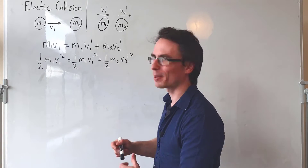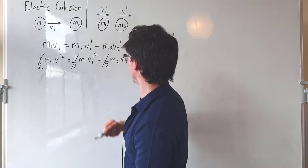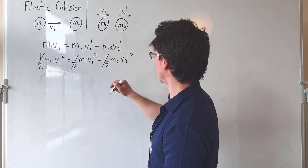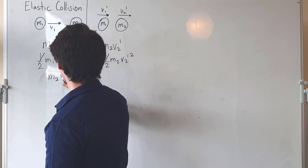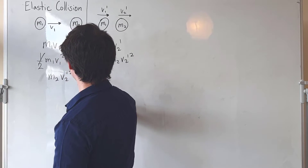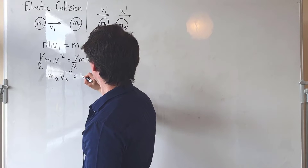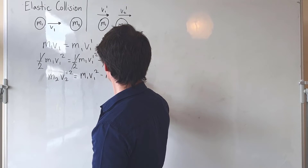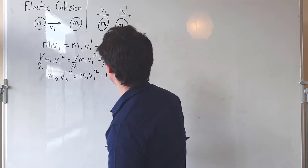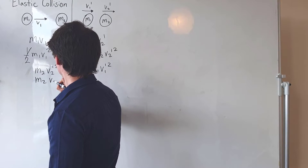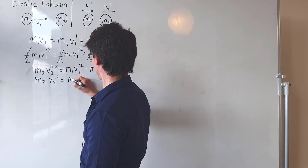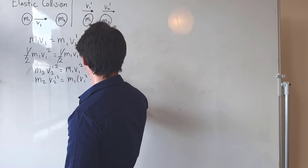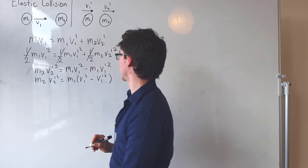Let's do a little bit of simplification. First, I'm going to get rid of these halves. Then I'm going to rearrange for m2 v2 prime squared. What we get is that m2 v2 prime squared equals m1 v1 squared minus m1 v1 prime squared. Our next step is to factor out m1, giving us m1 times (v1 squared minus v1 prime squared).